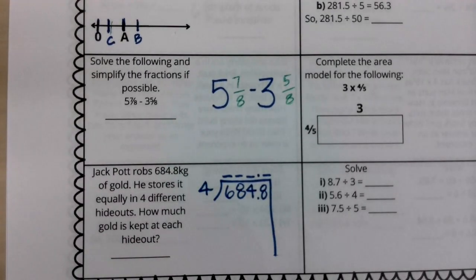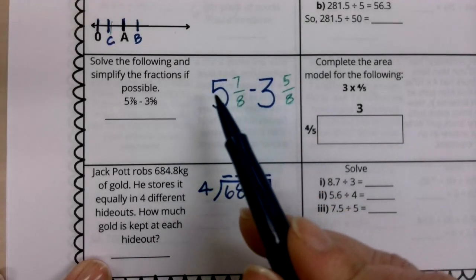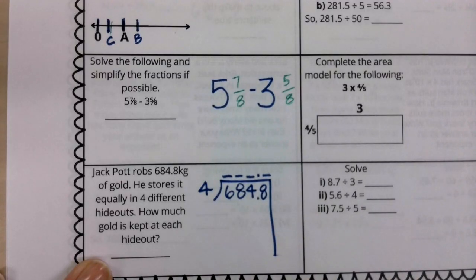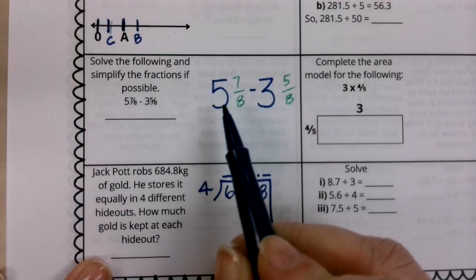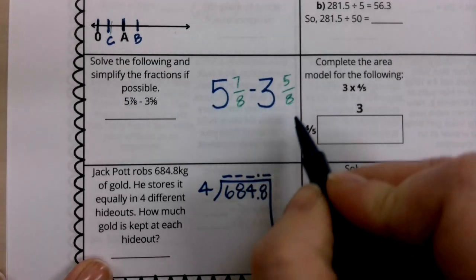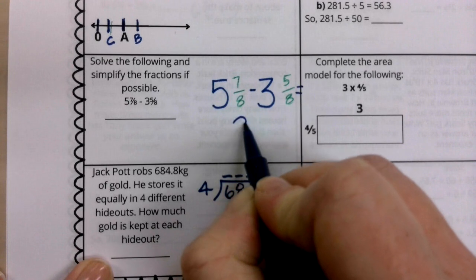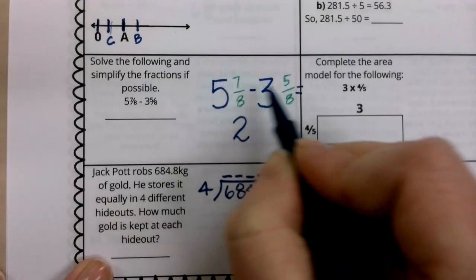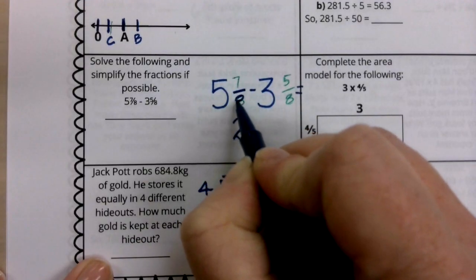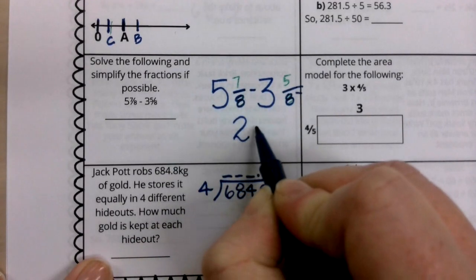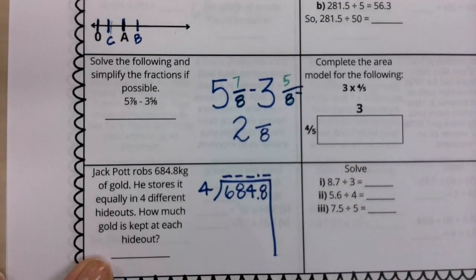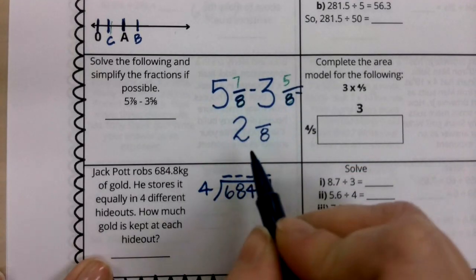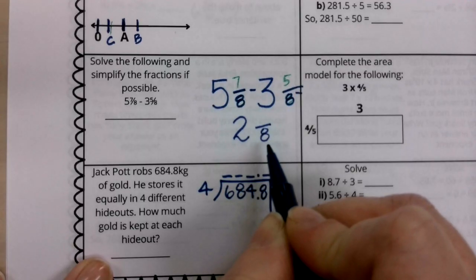This says solve the following and simplify the fractions if possible. Notice boys and girls, first of all, I have two whole numbers because I have a mixed number. I have a whole number part and a fraction part. So I know that, for example, here I have five minus three. So I know that is going to give me a big two because my whole number value will be two. Now I look at these fractions and I notice that they already have common denominators. Since they have common denominators, I can simply put my denominator here in my answer as well. My denominator is eight.